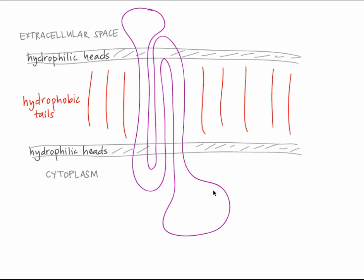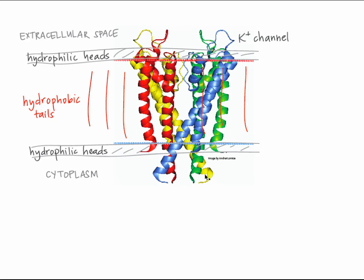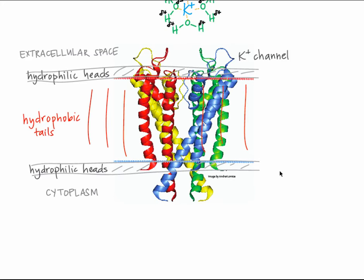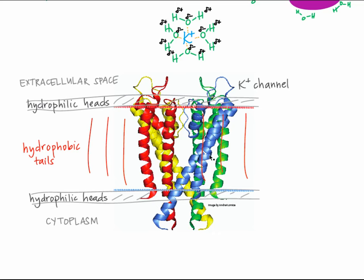In multi-pass transmembrane proteins, multiple segments of the polypeptide chain pass through the membrane. For example, the non-gated potassium ion channel protein, which is involved both in cell transport and neuron function, has eight transmembrane alpha helices arranged into a ring that forms the pore of the channel. Potassium is hydrophilic — it's a charged ion — and in the extracellular space or cytoplasm it forms favorable interactions with water molecules. In order for potassium to enter the channel, it must forgo those favorable interactions with partially negative oxygen atoms of water. This is only favorable if potassium can exchange those interactions for other favorable ones in the pore, and indeed, the inner lining of the channel is hydrophilic and can form favorable interactions with potassium ions.